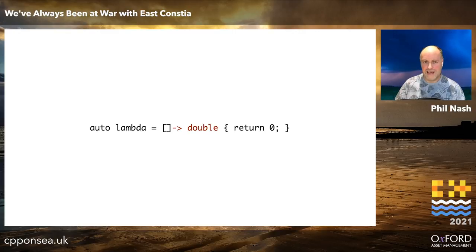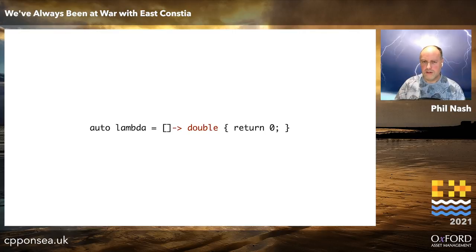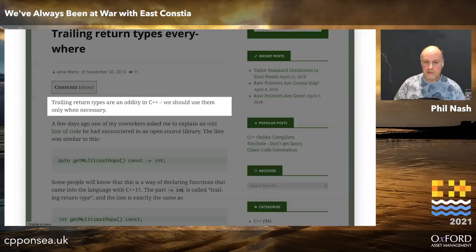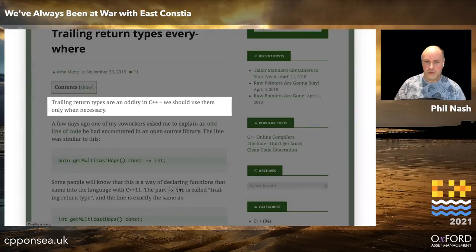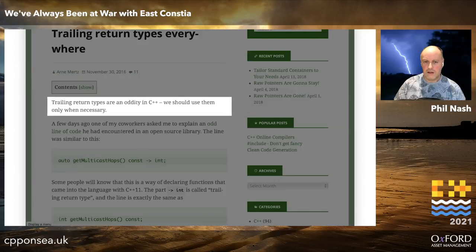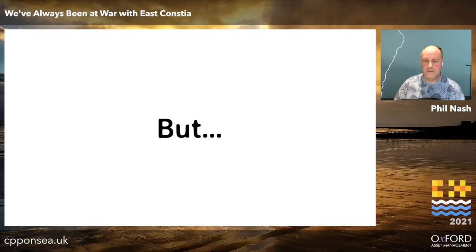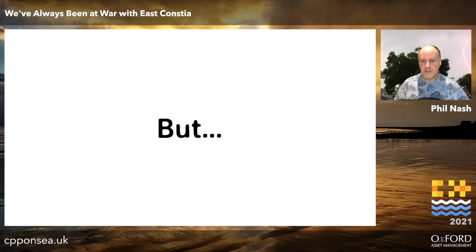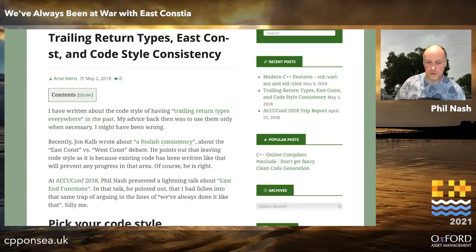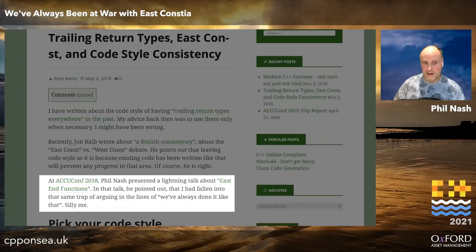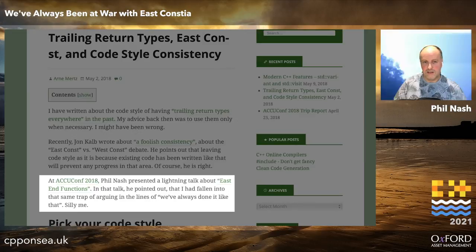But apart from cases where you really have to use it, is there any real reason to? Some people don't think so. Arno Mertz, in his Simplify C++ blog, said trailing return types are an oddity in C++ and we should use them only when necessary — which sounds like sensible advice. But some of us have experimented with using trailing return types everywhere, almost always, and we like it. It's worth noting that even Arno, after seeing my first version of this talk, reconsidered his position — admitting he had fallen into the trap of arguing 'but we've always done it like that,' the foolish consistency that John Cowper talks about.